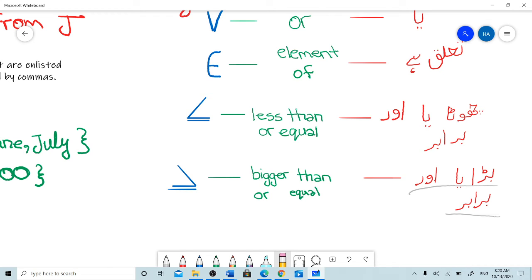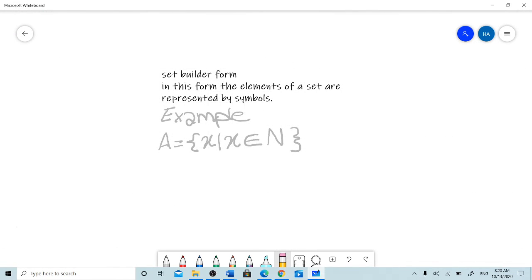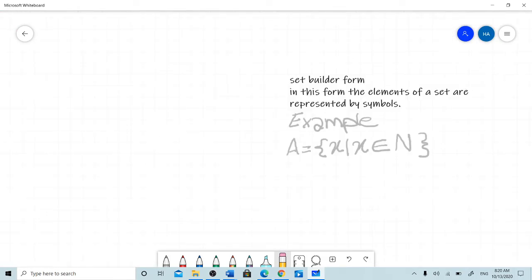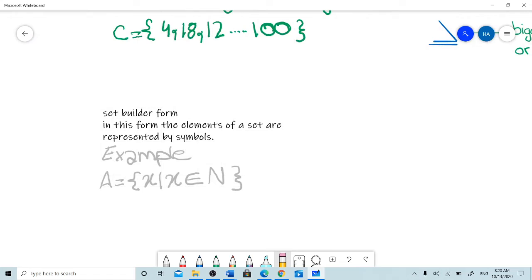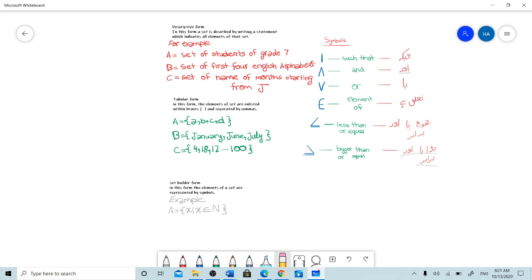For example: {x | x ∈ ℕ}. This bar means 'such that', and ℕ is known for natural numbers. So let's say it one more time: x such that x is the element of natural numbers.